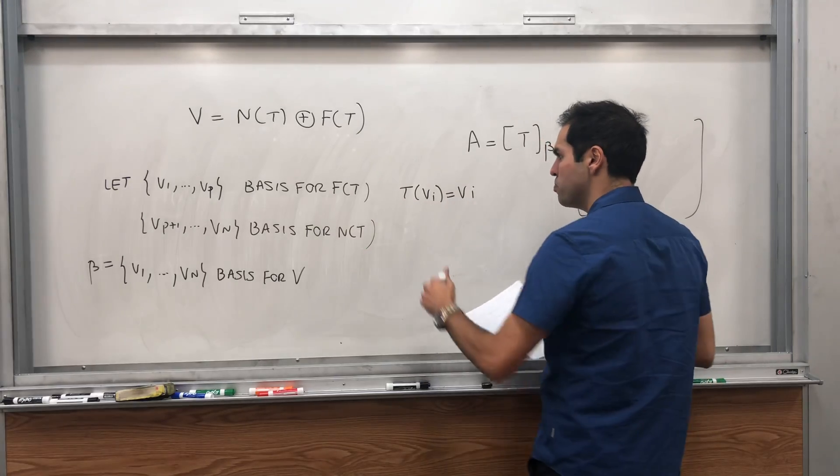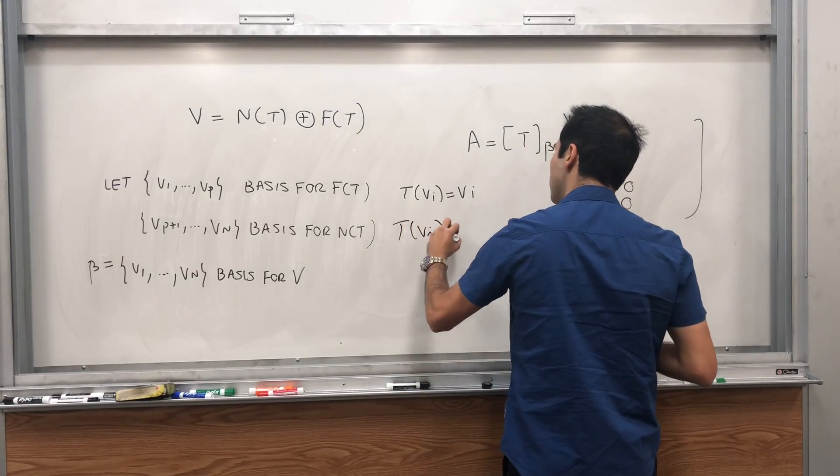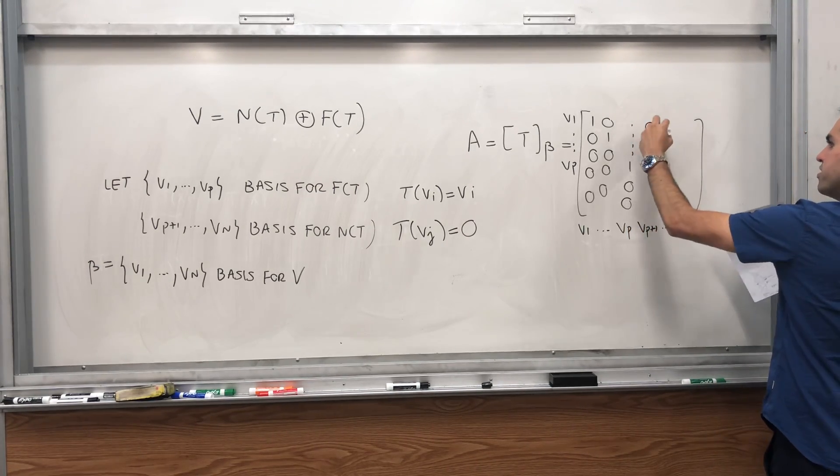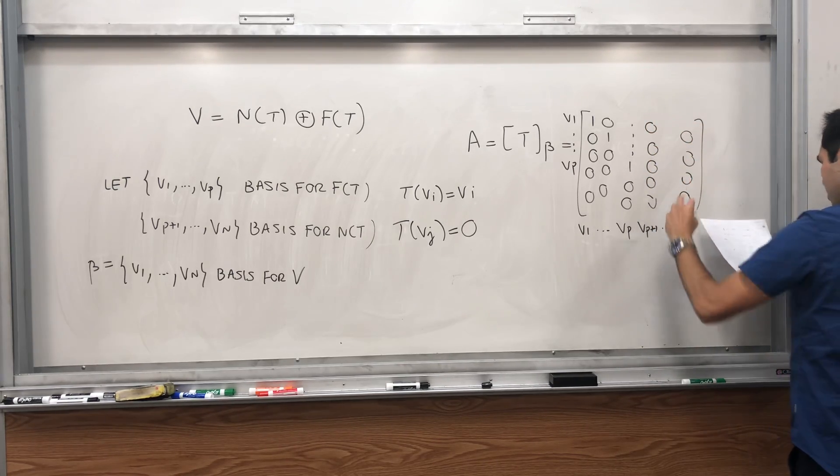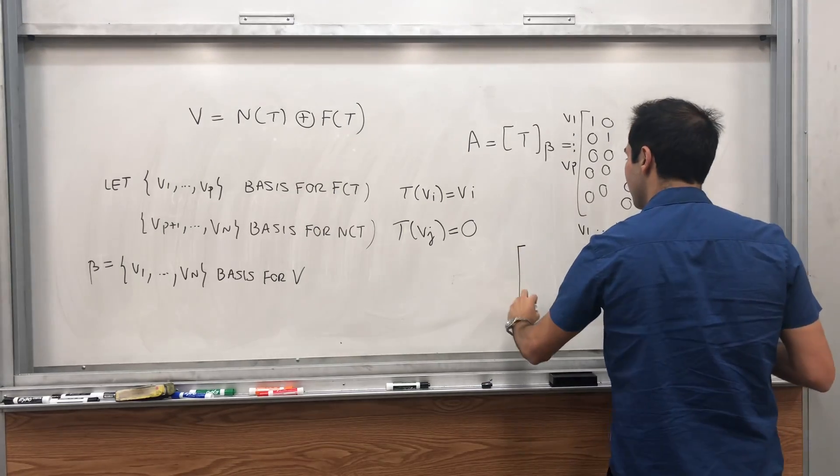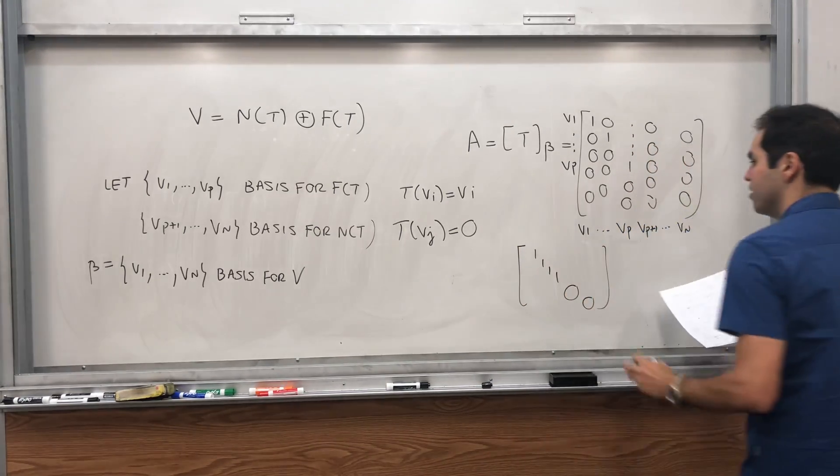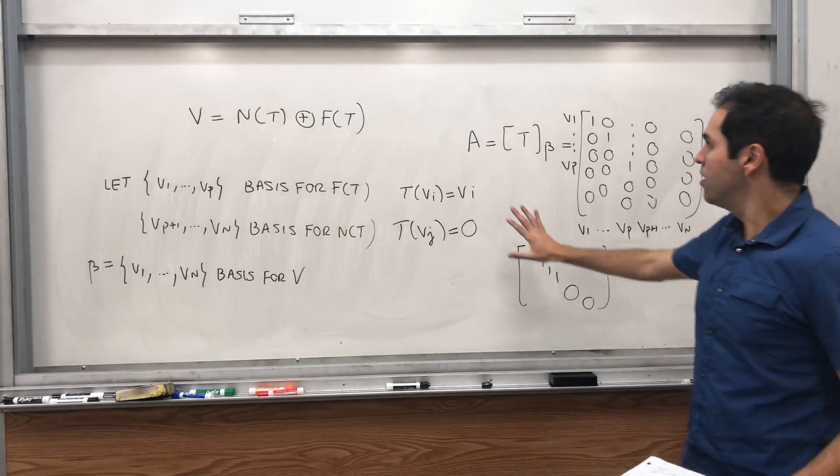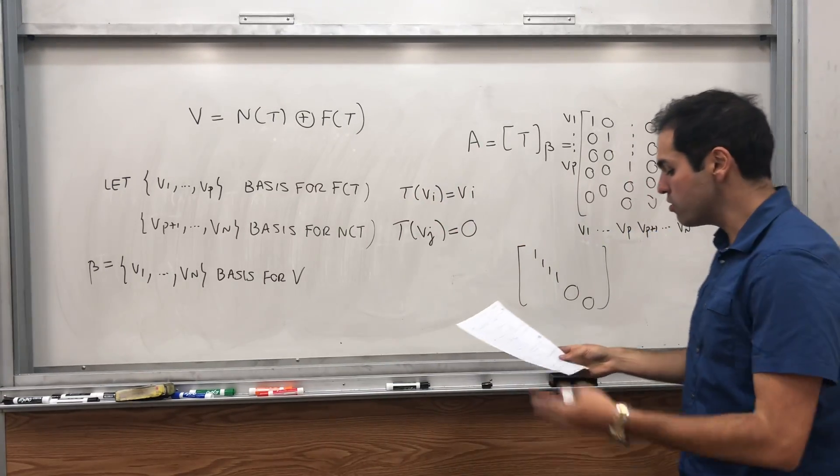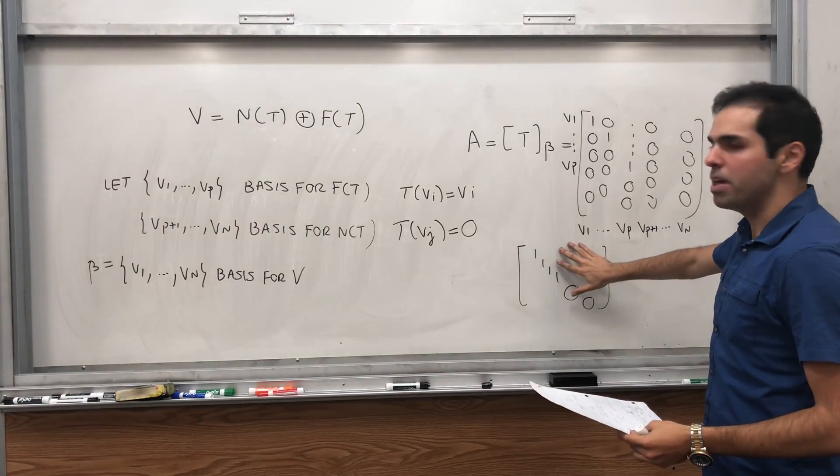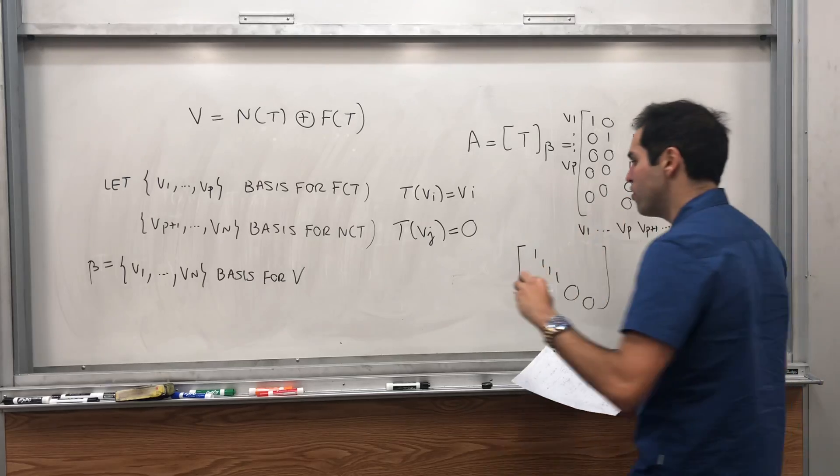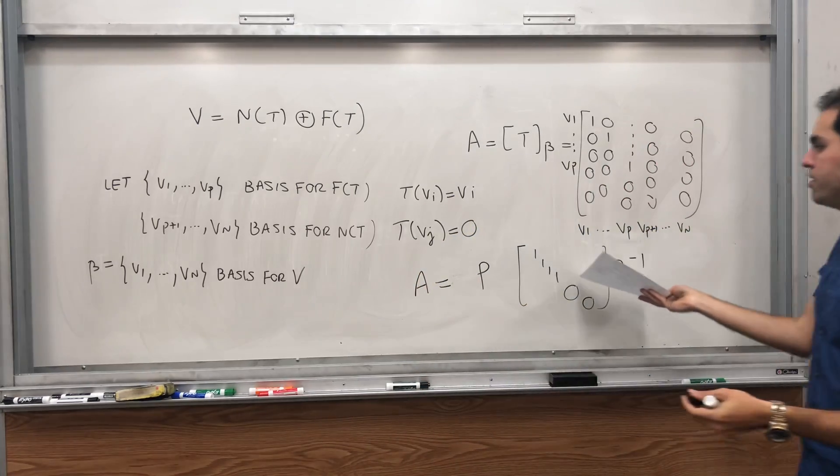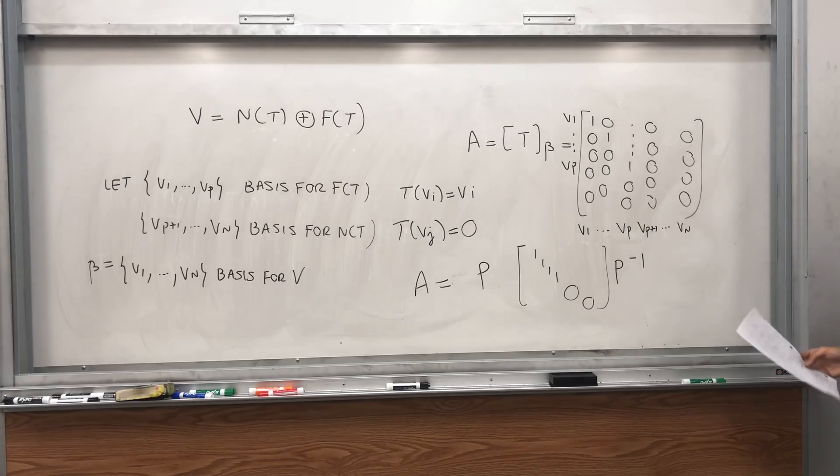On the other hand, on the null space, well, T(vj) is just 0. So by definition of the null space on all those other vectors, you just get 0. So what does the matrix of T look like? Well, it's one, one, one, bunch of ones, and then bunch of zeros. And this is with respect to this basis beta. What if you want to have the general case? Then you just use a change of coordinates matrix, which basically says the general case is this matrix conjugated by any invertible matrix. So if you do P, this P inverse, then it actually gives you all the matrices, which satisfy that T squared equals to T.